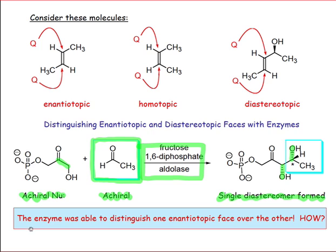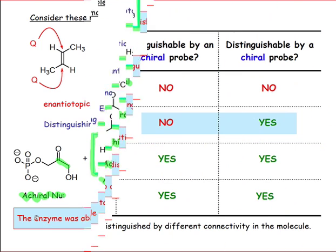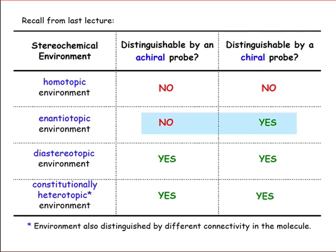The immediate question here is: how was the enzyme able to accomplish this remarkable distinguishing of the two enantiotopic faces of each of these molecules? We can get a handle on this if we remember from the last lesson that enantiotopic faces can be distinguished by a chiral probe. Enzymes are certainly chiral probes, as they're made up of chiral amino acids. The chiral probe is able to distinguish the enantiotopic faces of the nucleophile — the nucleophilic enolate — and the electrophile.